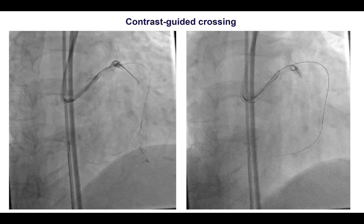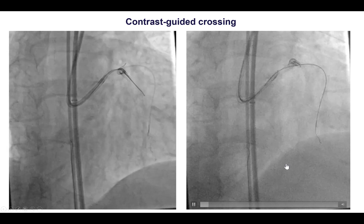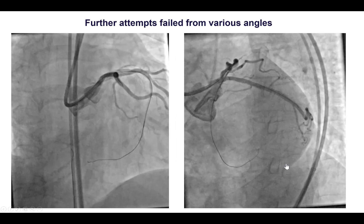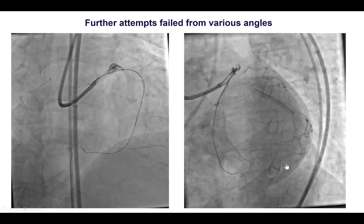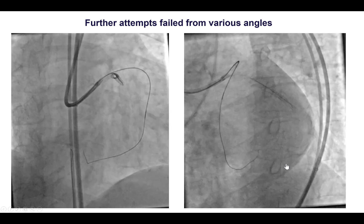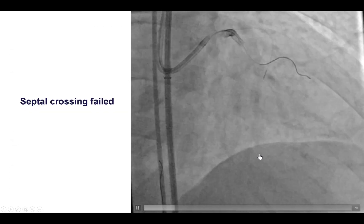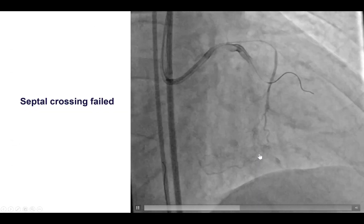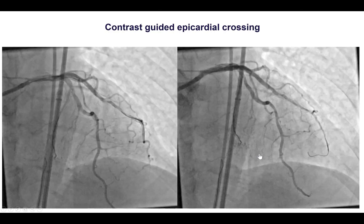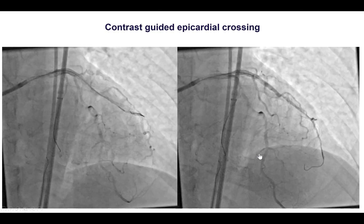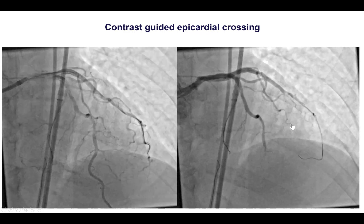We did some more contrast injections with the microcatheter, but once again we were unable to advance the retrograde guide wire. We tried different angles — sometimes the LAO view can help across the septal collaterals, but even in the LAO view we were not successful. So we failed to cross the septal collateral, and that is why we decided to go with retrograde crossing through the epicardial collateral from the first obtuse marginal branch.